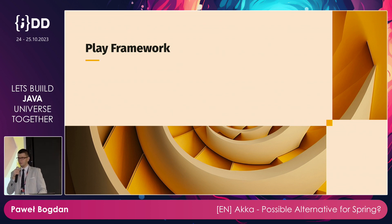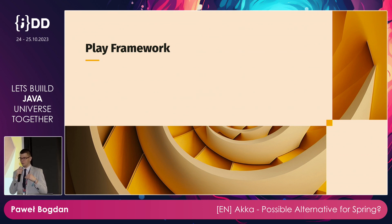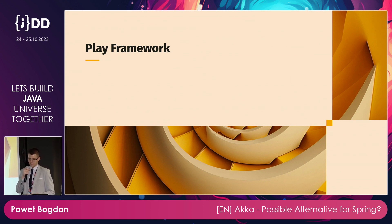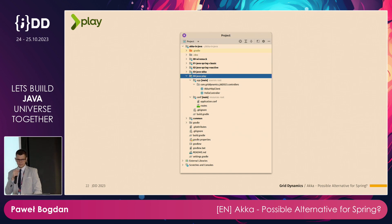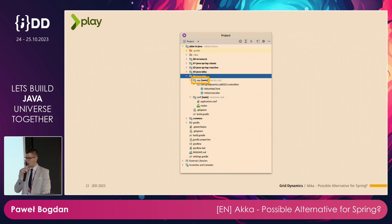So why am I here? The title of the presentation is presenting an alternative to Spring, and I strongly believe you are not convinced that ACCA can replace Spring in any case. I can agree with that. That's why I would like to show you something new — something not mentioned in the abstract of this presentation. I would like to show you Play Framework. Play Framework is built on top of ACCA, so we use all the good features of ACCA without producing this messy code.